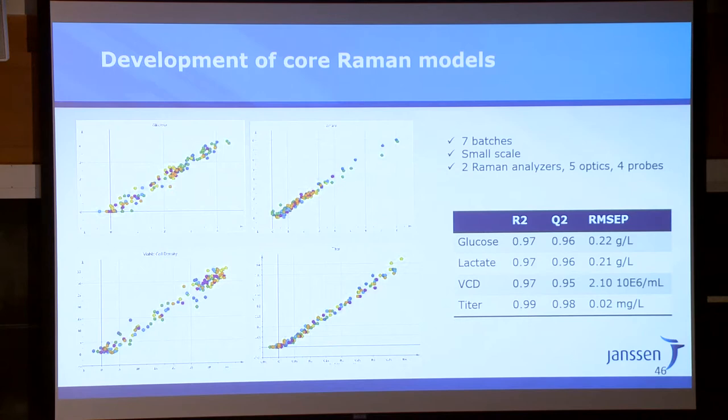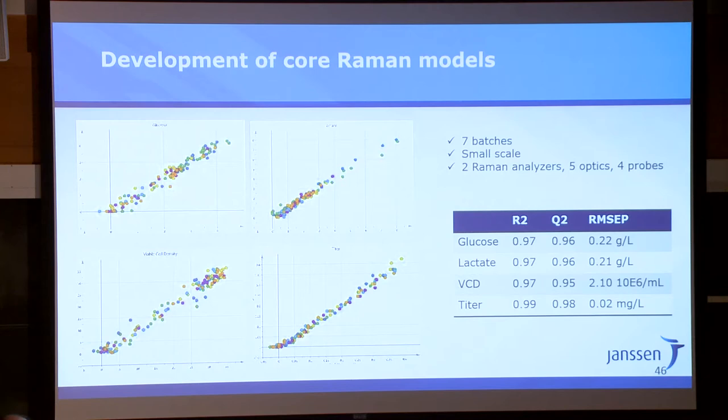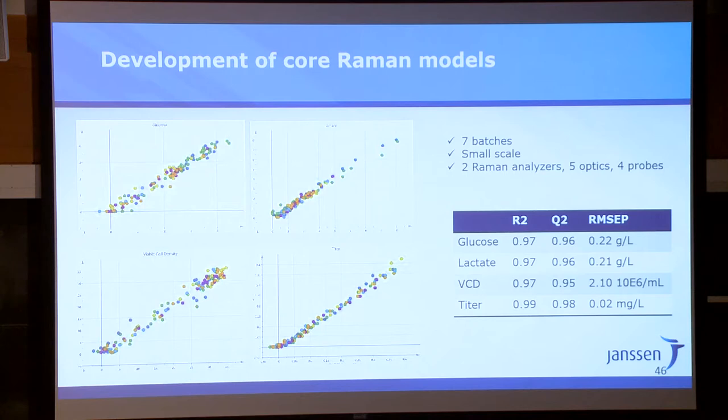We can use Raman for a number of other measurements — viable cell density, titer, various metabolites. These are things you wouldn't even think you can do with Raman, which is more than just a chemical fingerprint. The errors are very small — this is really a very robust measurement. Using that now more and more for control, the key one is glucose. Traditionally you give it a shot of glucose every day whether it needs it or not, and you see the trace of glucose with surprising variability.